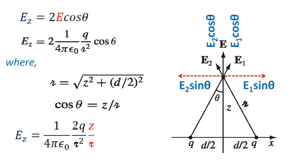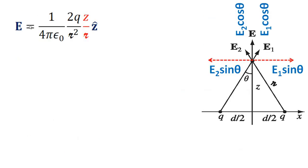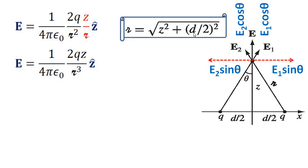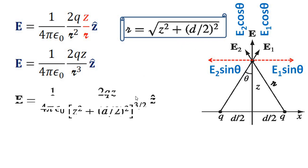This is the vector formula. The electric field E as a vector value includes z-hat as a unit vector along the direction of z. Substituting r = √(z² + (d/2)²), we get r³ equal to (z² + (d/2)²) raised to 3/2. This gives us the general equation for E.